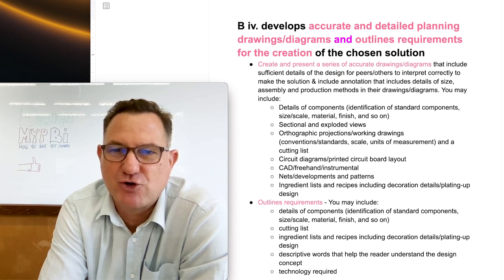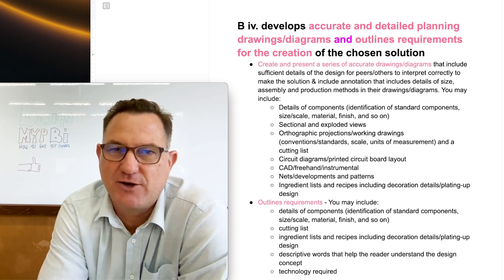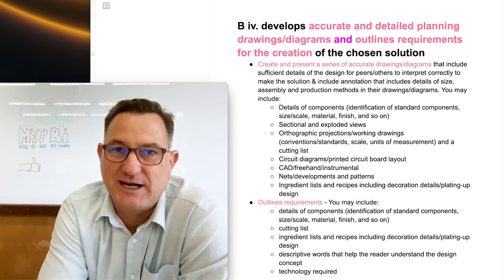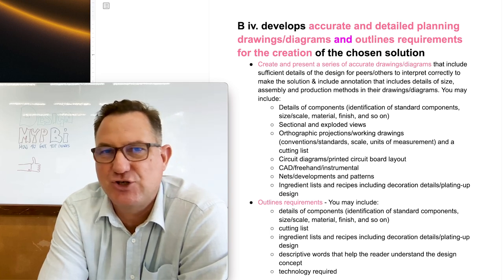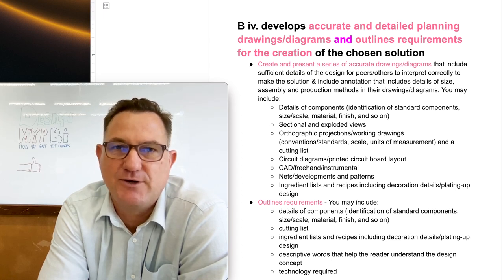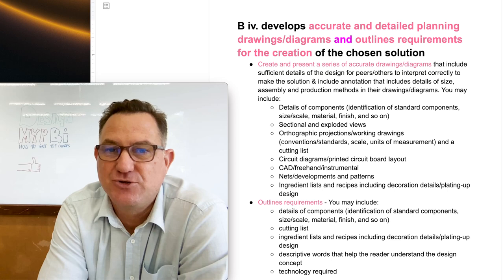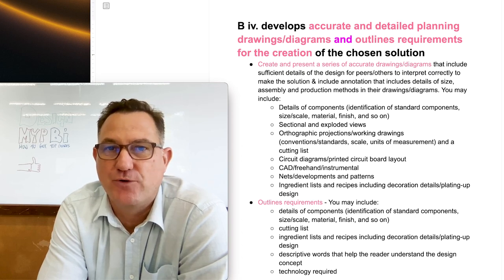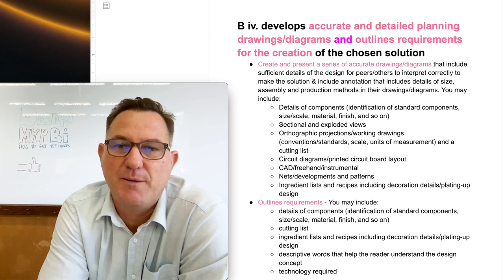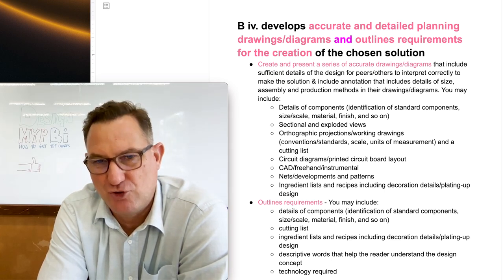Strand 4 — we'll start by focusing on the assessment criteria. It talks about developing accurate and detailed planning drawings and diagrams. Accurate and detailed are highlighted: if you want top marks, your drawings need to be both. Notice it says drawings with an S and diagrams with an S, so you can't just produce one drawing — you need several. The next part, AND is key, because you not only need drawings but also need to outline requirements for the creation. So there are two distinct parts: drawings and the outline requirements.